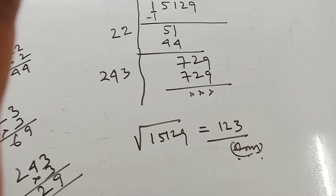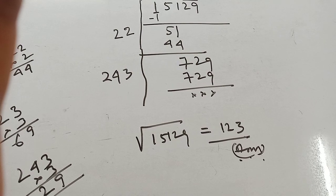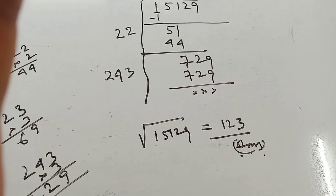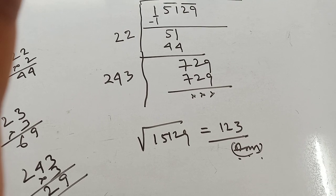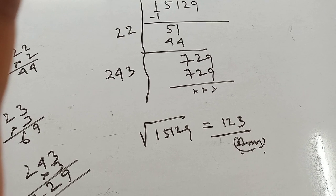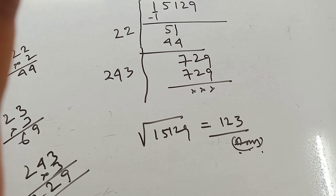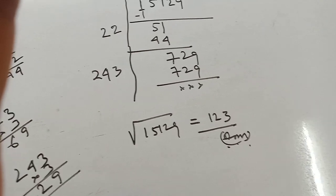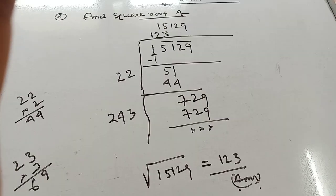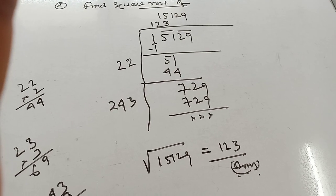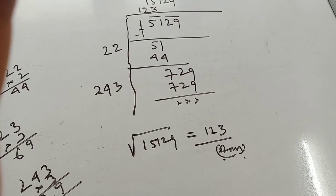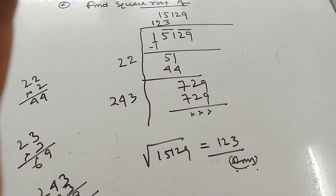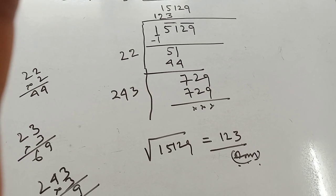Multiply by 3: 243 into 3 equals 729. So the square root of 15129 is 123. This is the division method.